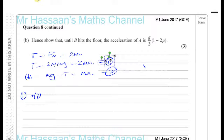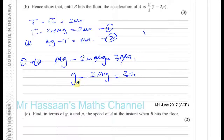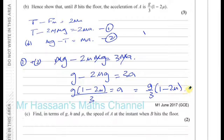Adding them together, the T's cancel and we get mg minus 2μmg equals 3mA. The m's cancel, leaving g minus 2μg equals 3A. Taking g as a common factor gives g(1 minus 2μ) equals 3A. Dividing by 3 gives A equals g over 3 times (1 minus 2μ). So we've done part B.